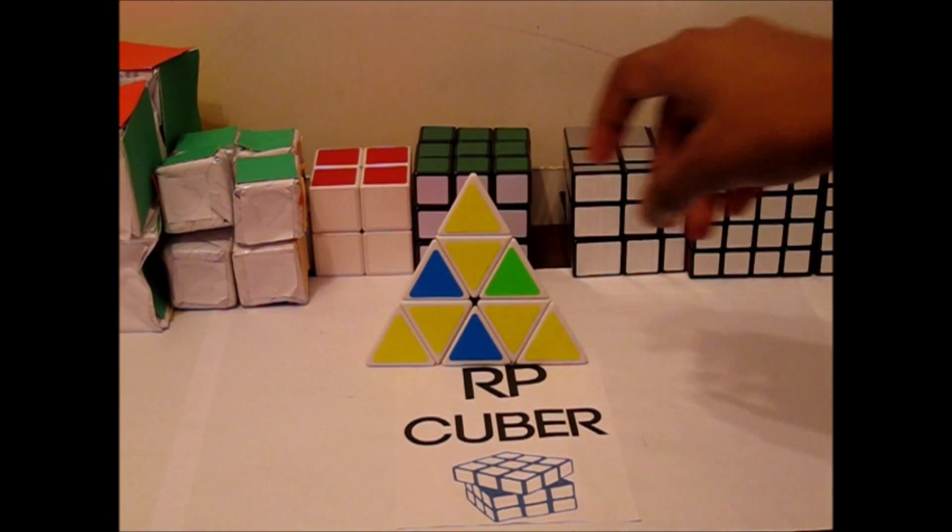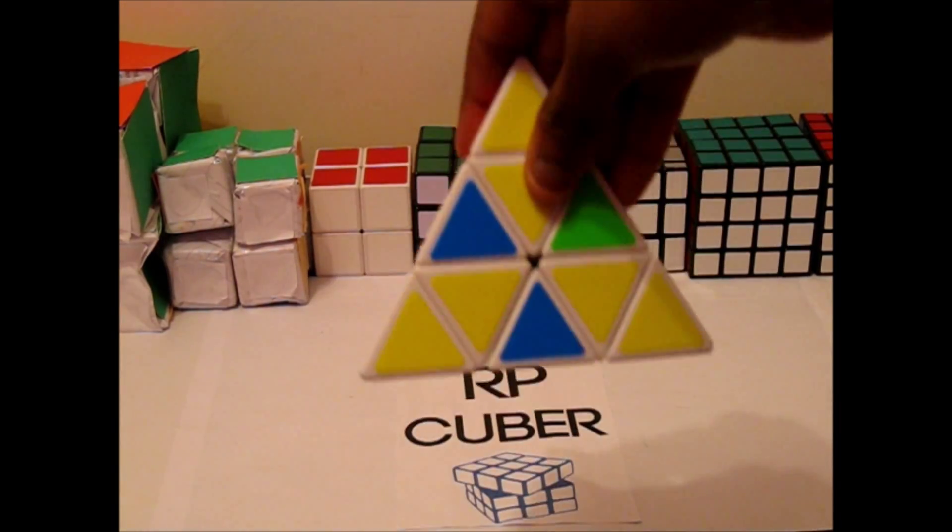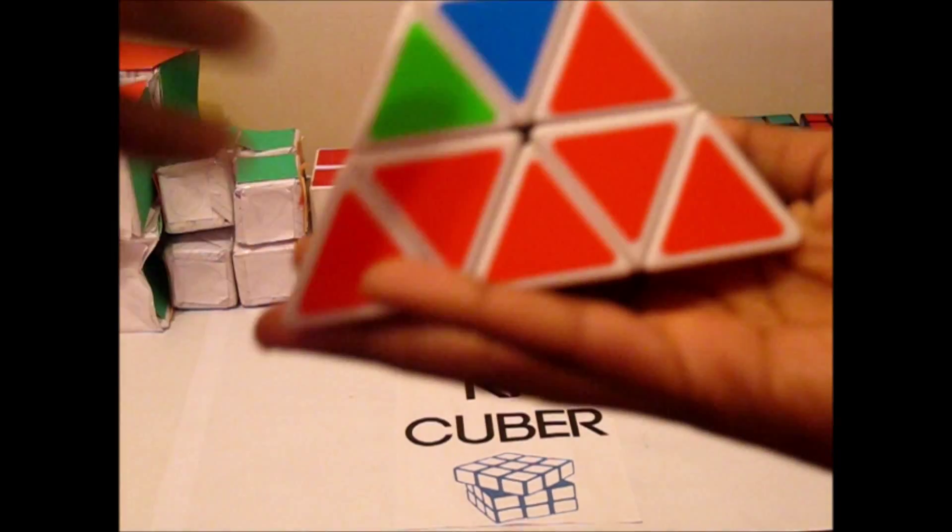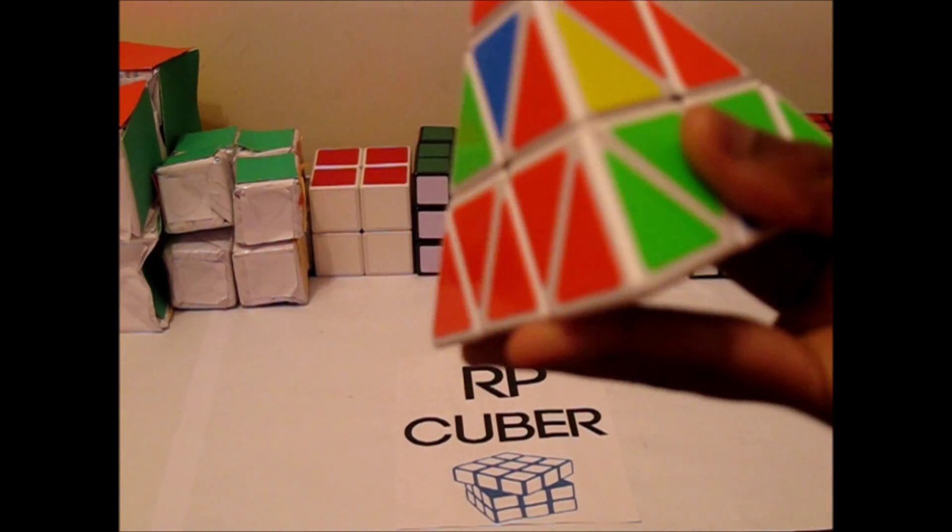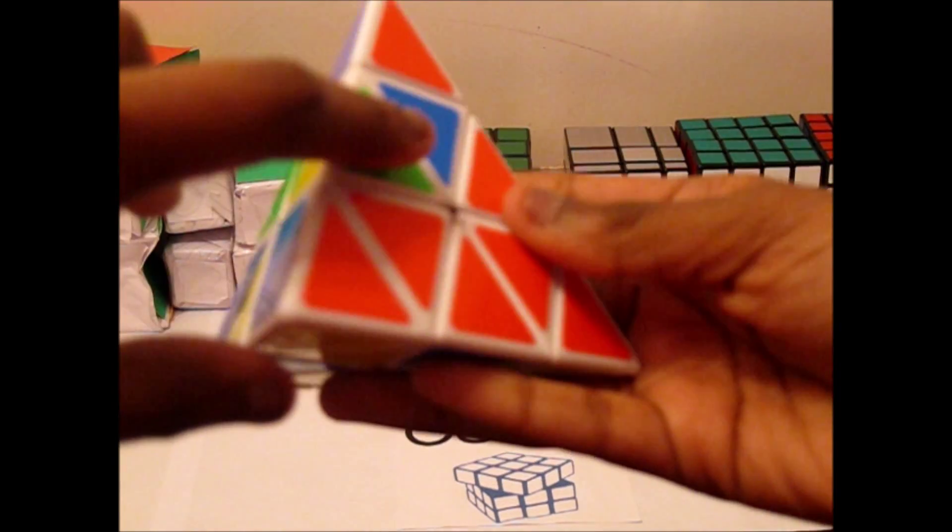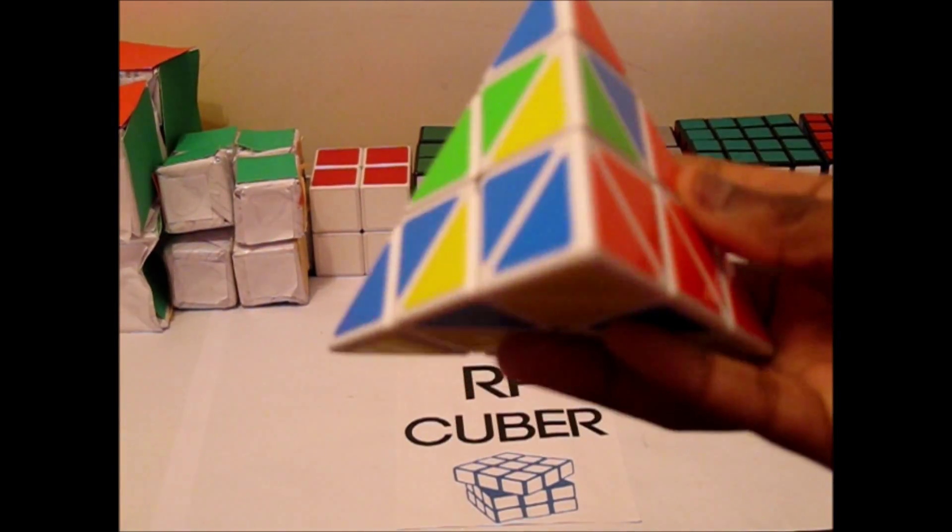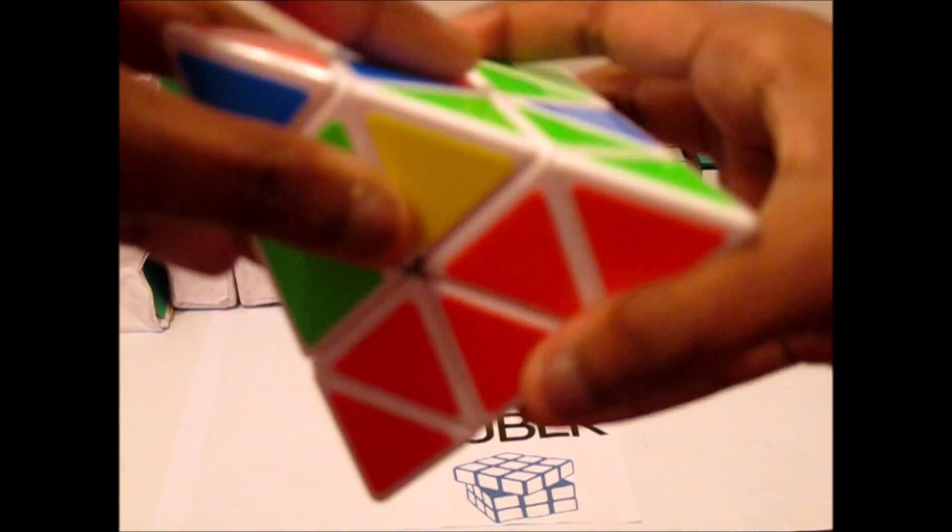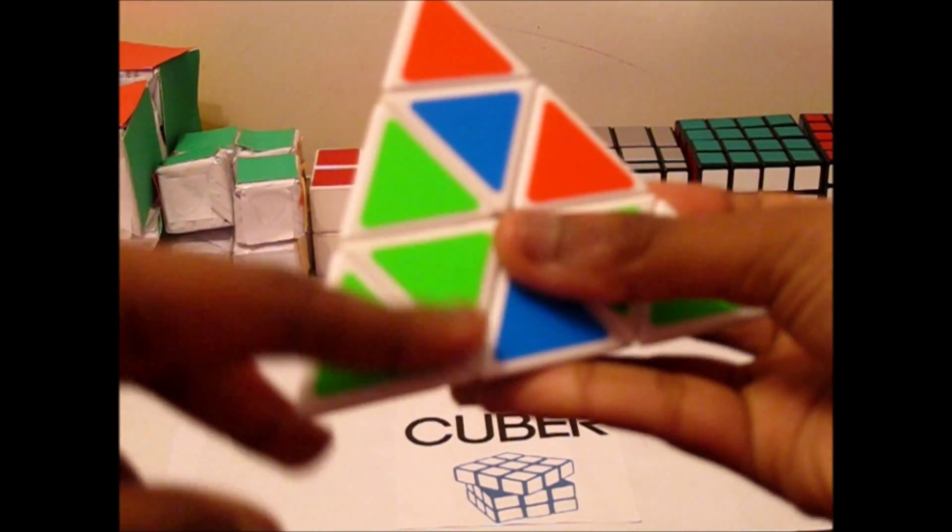So now these are the centers done, and it's time to do the edges. So when you're solving the edges, you need to make sure your yellow side or whatever side you're facing is facing at the bottom.